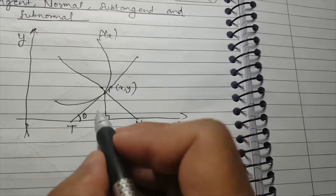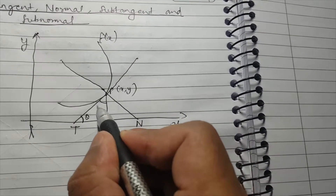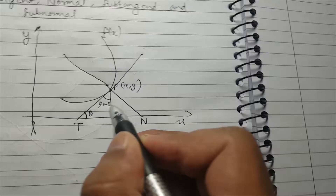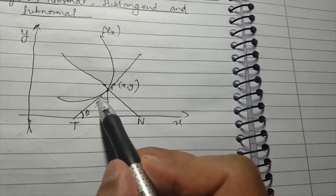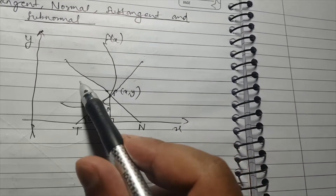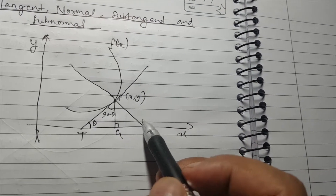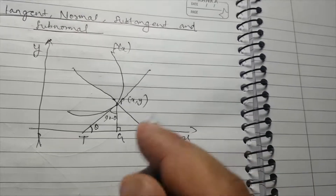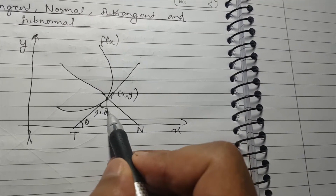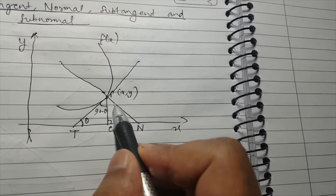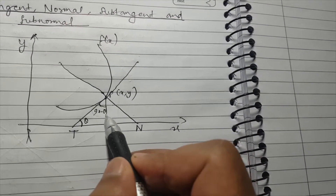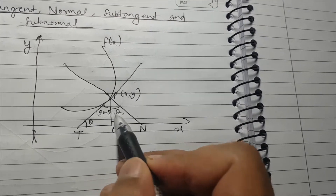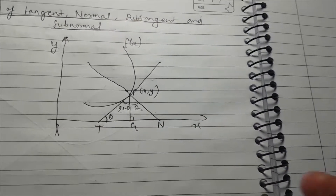This angle at G will be 90 minus theta. Since the normal and tangent are perpendicular to each other, the whole angle is 90, so 90 minus (90 minus theta) gives us theta again at that angle.